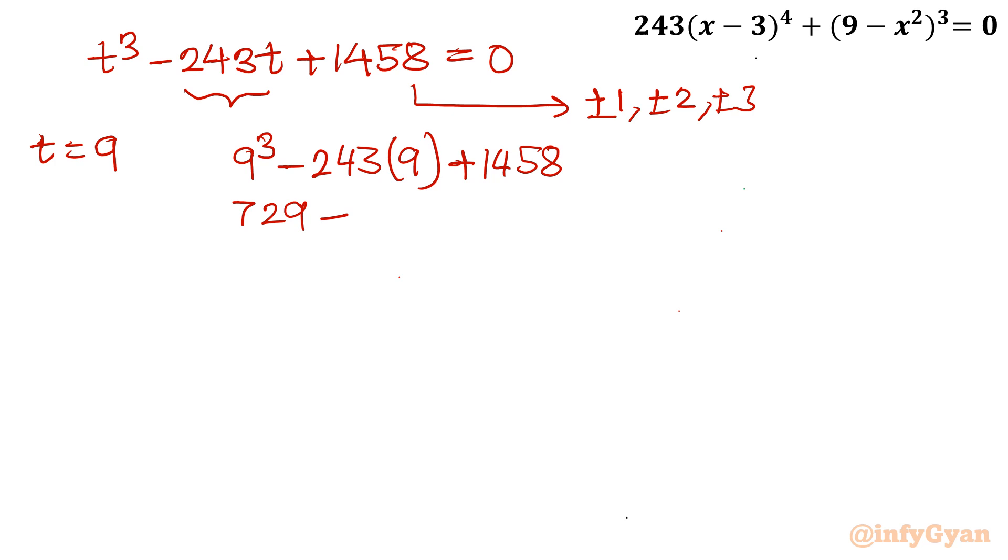Let me find out 243 times 9 plus 1458. Is this 0? So 9 cube is 729. 243 times 9 is 2187. So it is coming out minus 2187. It will be cancelled with 2187. So yes, this is true. That means t equal to 9 is our base solution. So we will consider synthetic division method.